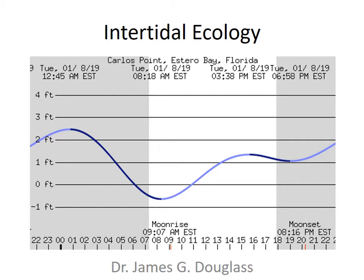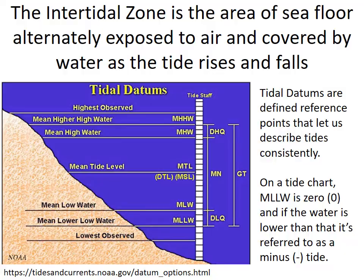Hello everybody. This lesson is about intertidal ecology. The picture we're showing here is a tide chart which illustrates the tidal elevation over the course of a 24-hour period. You can see that there are highs and low periods of the tide that occur twice within the 24-hour cycle. Tides vary from place to place, but the general idea is that water levels go up and down some amount over 12 or 24 hours.